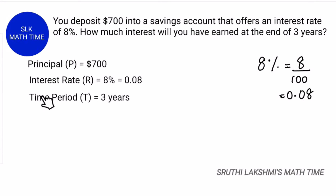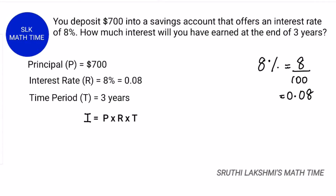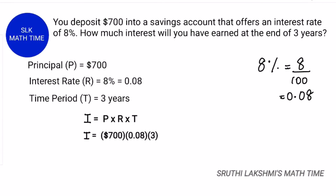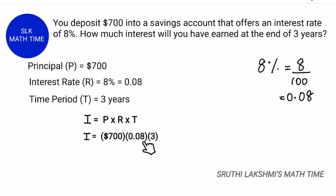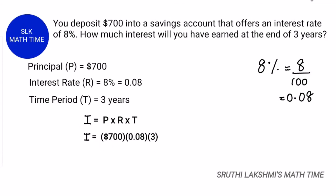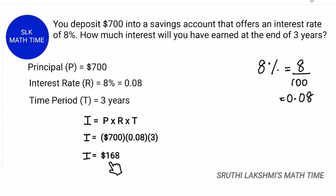The time period or duration is 3 years. So, the formula is I = P × R × T. Here, P is the principal which is 700, the interest rate is 0.08, and the duration is 3 years. When we multiply them together, I = $168.